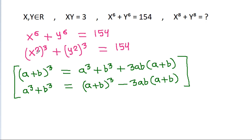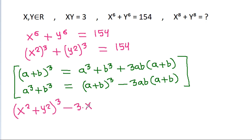So, x square cubed plus y square cubed will be x square plus y square cubed minus 3 times x square times y square times x square plus y square.